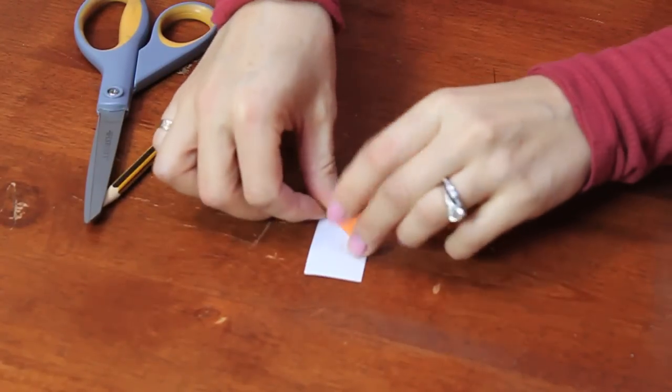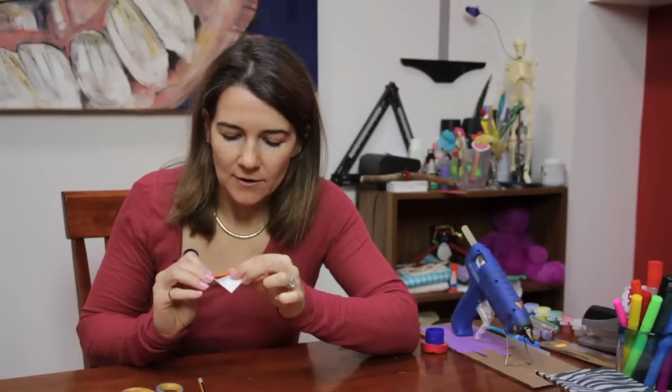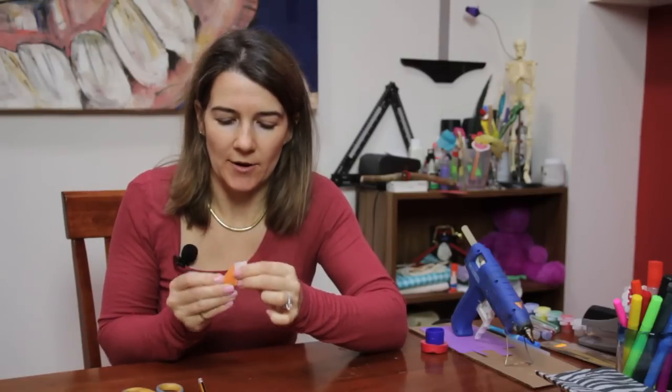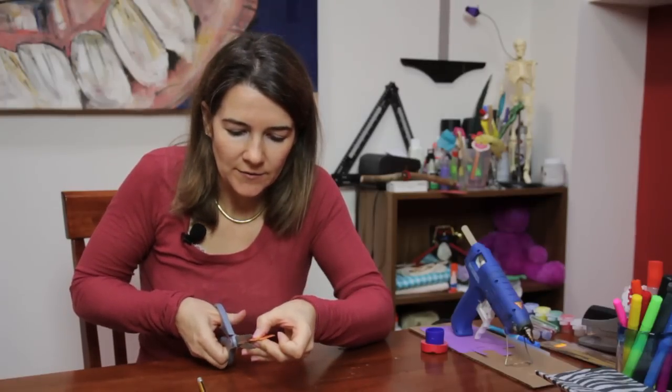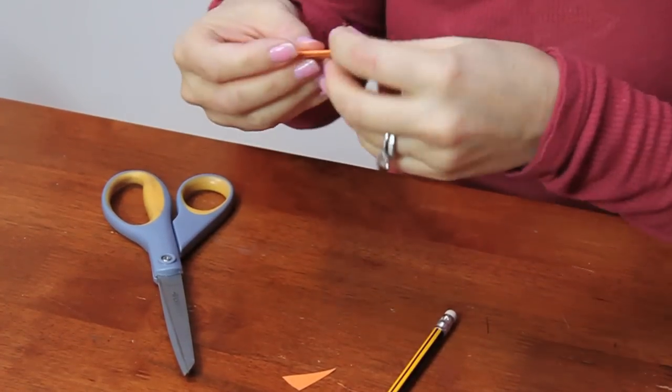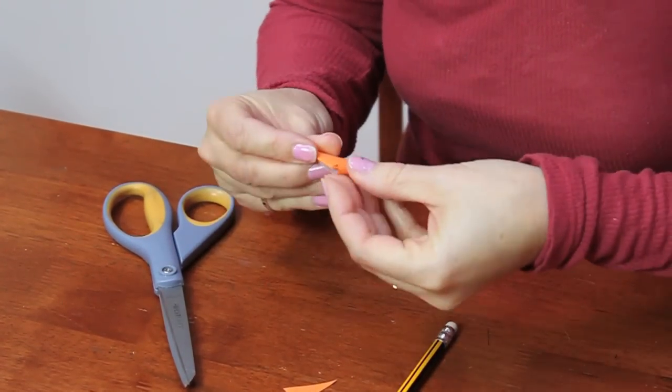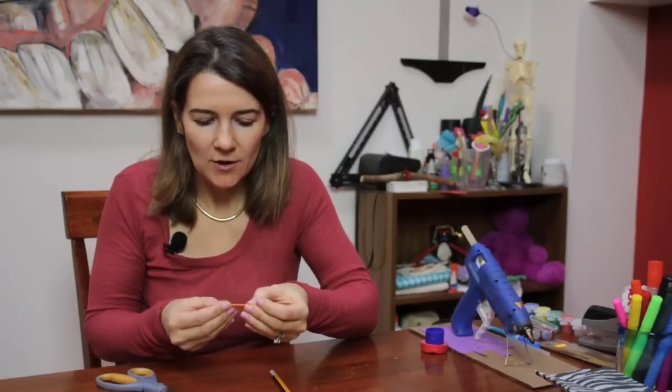By the time you reach the end, there's going to be a little pocket in the heart. You're going to take this end and cut one of the corners off so that it has a point. Then you're just going to slide it right into that little pocket so it finishes off. You'll have what looks like a little teeny triangle.